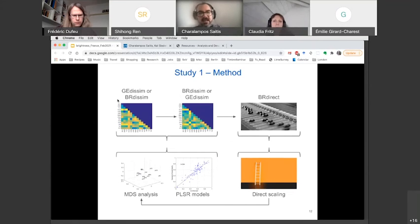And here we have the design. So half of the listeners first did a general dissimilarity task. Then they did a brightness dissimilarity task. And finally, they did a direct ratings task. The other half did first the brightness dissimilarity, then the general dissimilarity, and again at the end, they did the direct ratings. We did simple scaling of the direct ratings. We did multidimensional scaling of the dissimilarity data. And we also developed some partial least square regression models to see the influence of acoustical versus categorical descriptors.